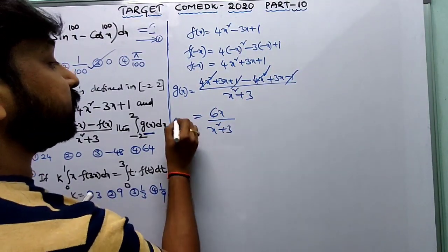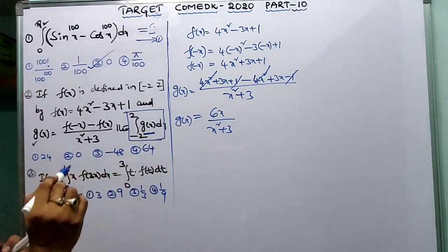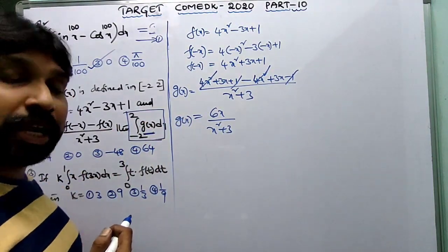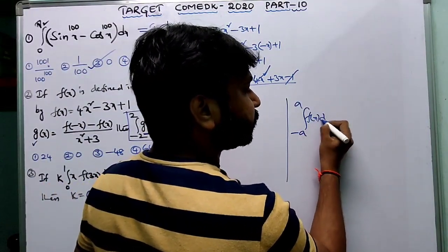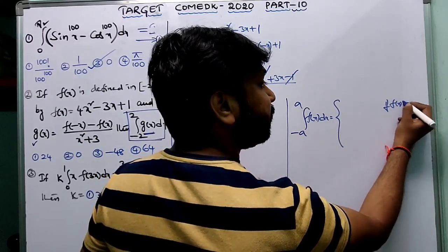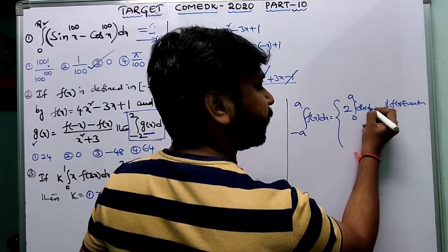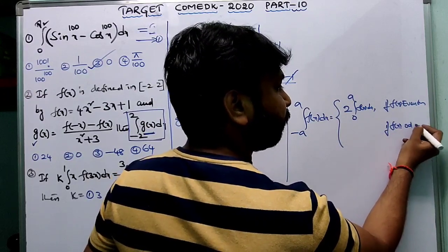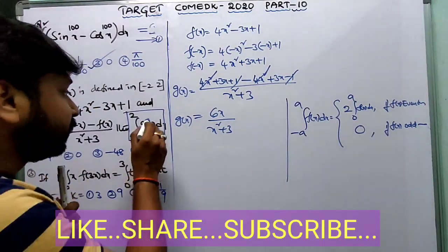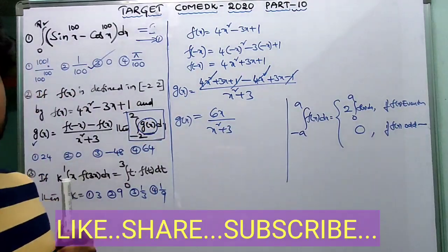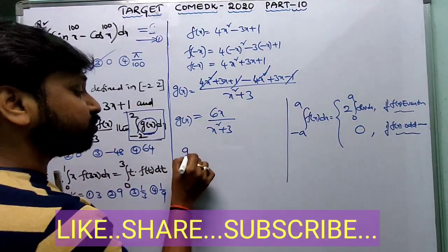So the question becomes integral from -2 to 2 of g(x) dx, where g(x) = 6x / (x² + 3). Using the property: integral from minus a to a of f(x) dx equals 2 times integral from 0 to a of f(x) dx if f is even, or equals 0 if f is odd. We need to check whether g(x) is even or odd.